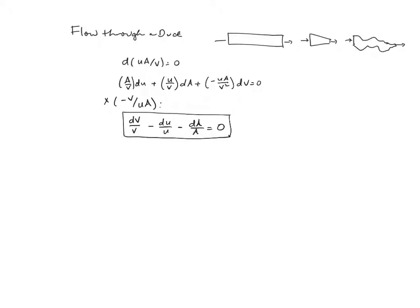Now, if I look at the energy balance: DQ + DW = DH + UDU + GDZ. Generally I can assume that the change in Z is very small. The size of these things is so small that heat loss, even if I fail to insulate it, is probably very small. And there are no moving parts, so work is zero. So we end up with the energy balance: DH = −UDU under these assumptions.